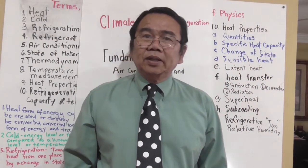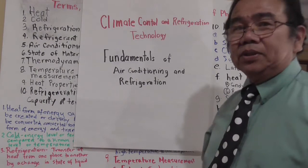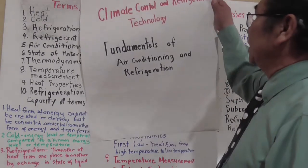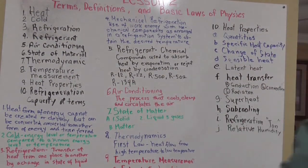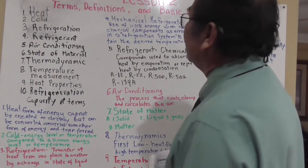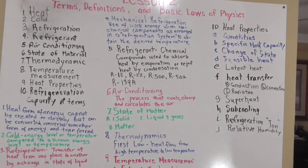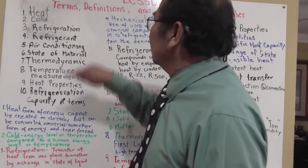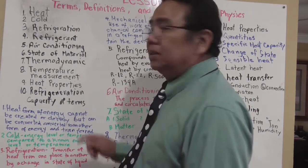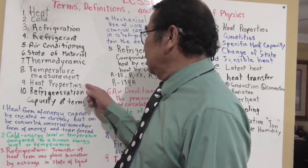Hi, good day. Today I'll be continuing the lecture on climate control refrigeration technology. This is the second lecture and we're going to be talking about the fundamentals of air conditioning and refrigeration. Lesson number two will cover terms, definitions, and basic laws, including key topics like refrigerant, air conditioning, states of matter, thermodynamics, temperature measurement, heat properties, and refrigeration capacity.